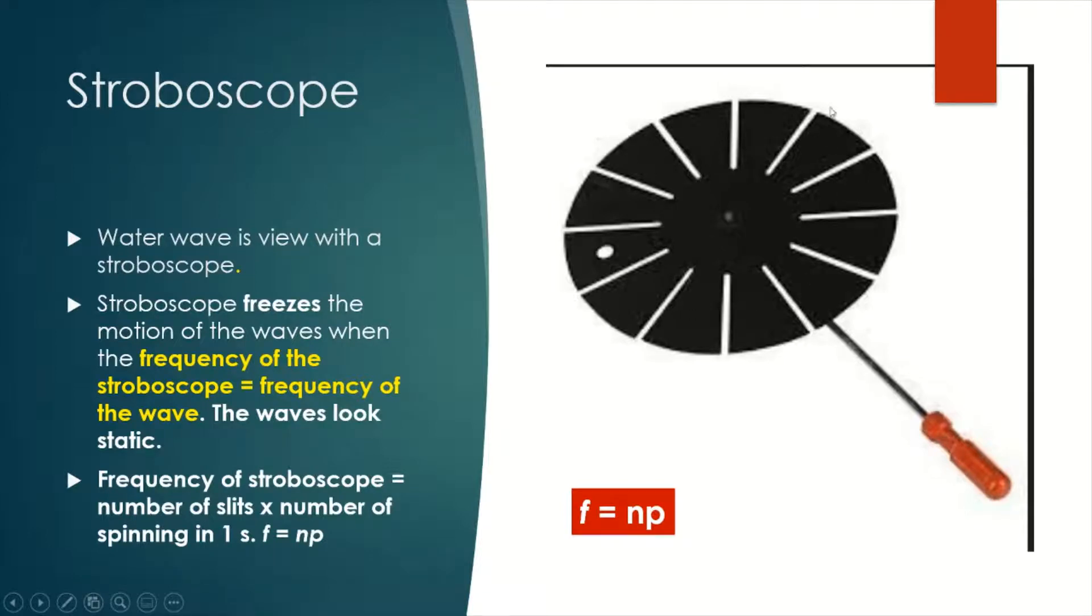A stroboscope is a disk with many slits on it. As we spin the stroboscope and we look through this hole here, we can see the motion of anything that is moving.